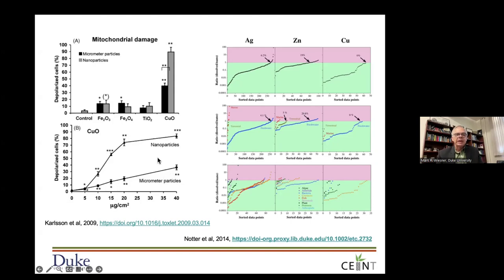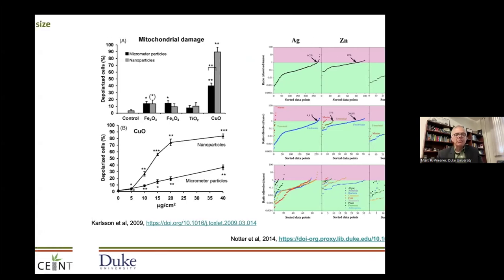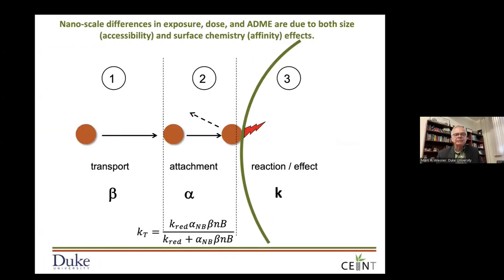This will be an important distinction also as we talk about the difference between microplastics and nanoplastics — we can expect differences in their toxicological properties. This is the conceptual model we laid out for how nanoparticles might interact with a bacterium if you're doing disinfection, or with a tissue in an exposure scenario.